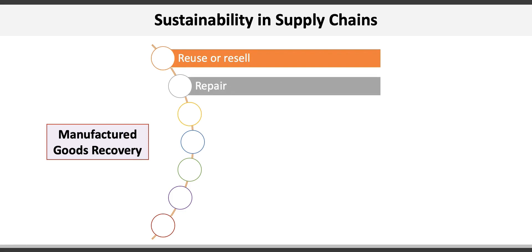A firm may repair a manufactured good by replacing broken parts so it operates as required — PCs, vehicle parts, and shoes are examples. Businesses can refurbish manufactured goods by updating looks or components, such as cleaning, painting, or replacing parts that are near failure. Products may have scratches, dents, or other cosmetic damage that don't affect performance. In fact, Apple makes a good business in refurbished products.